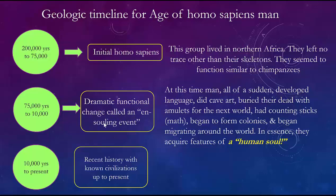But at 75,000 years a dramatic functional change occurred — called the ensuing process. At this time man suddenly developed language — syntactic language — made cave art, buried their dead with amulets as if there was a next world, had a sense of the hereafter, had counting sticks showing mathematical understanding, began to form colonies, and began migrating around the world. In essence they acquired what we call a human soul. This requires a very sophisticated change in brain function, happening very quickly right at the 75,000-year timeline.